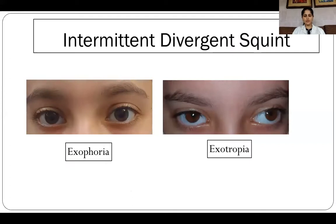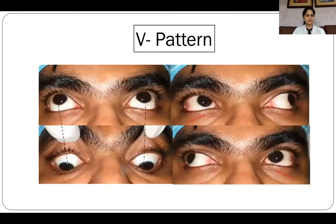Intermittent exotropia is the most common type of exotropia and is frequently encountered in clinical practice. It starts as a latent deviation, shifts to an intermittent exotropia, and then becomes constant. Binocularity is present in the phoric phase, but with progression one eye becomes suppressed. Horizontal deviations are commonly associated with A and V patterns. In V pattern exotropia, the divergence is more in upgaze and less in downgaze. This is because of inferior oblique overaction.